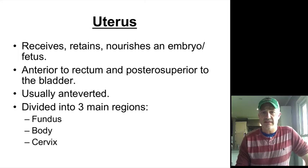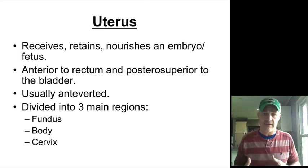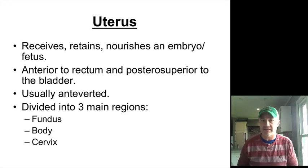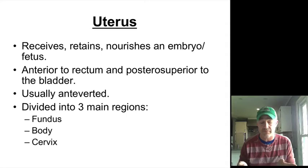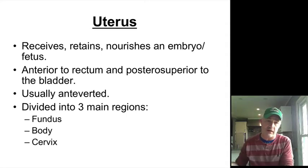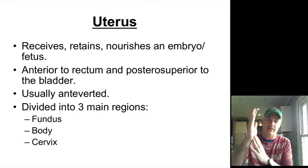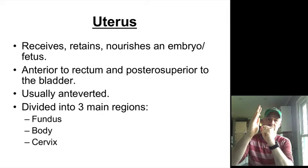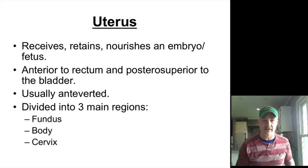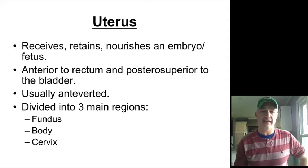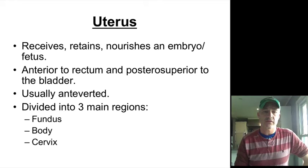The uterus is going to receive the embryo and provide a place for implantation and maintain the pregnancy. Gestation is really 38 weeks, but with two weeks leading up to ovulation, they typically say 40 weeks total. The uterus is positioned in front of the rectum and leans over the top of the bladder—this is what's called anteverted. It is divided into three regions: the fundus (the dome at the top), the main body, and the cervix.